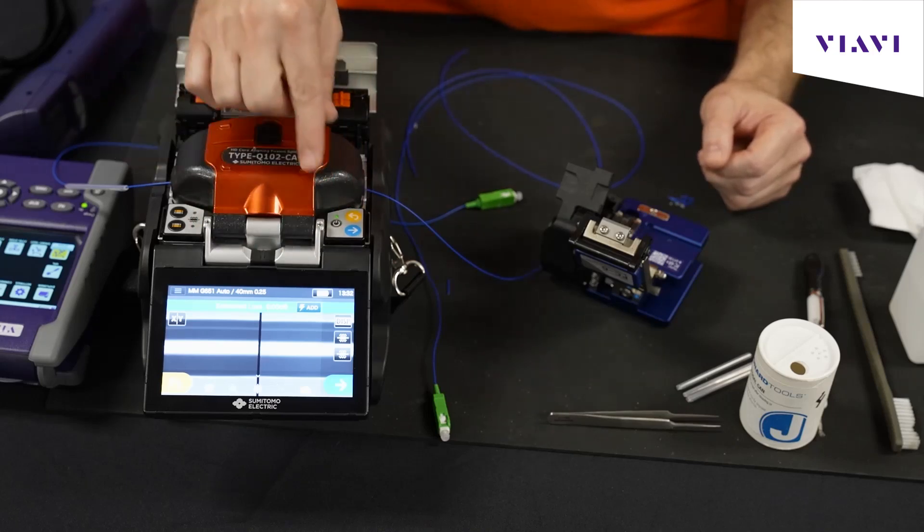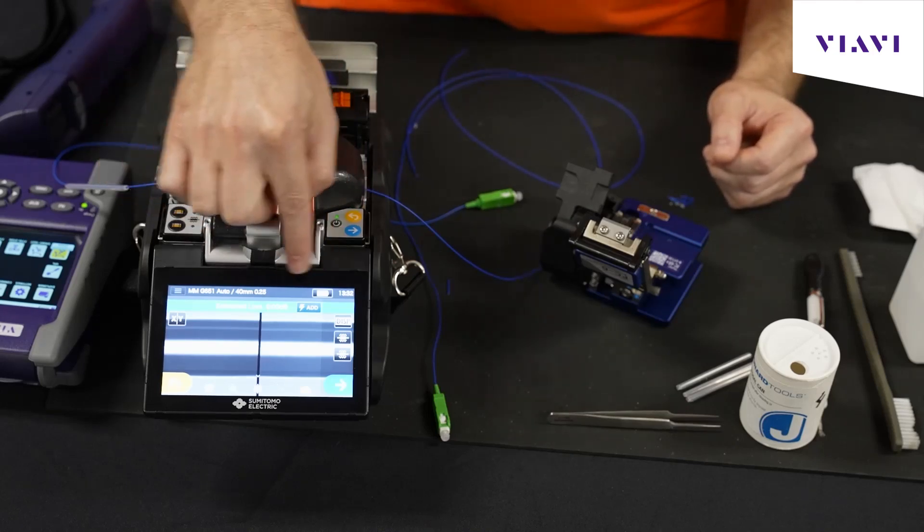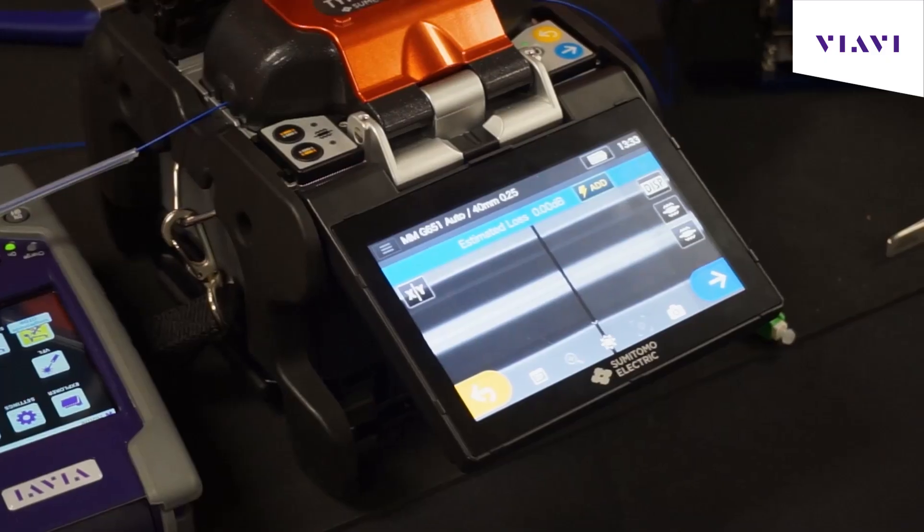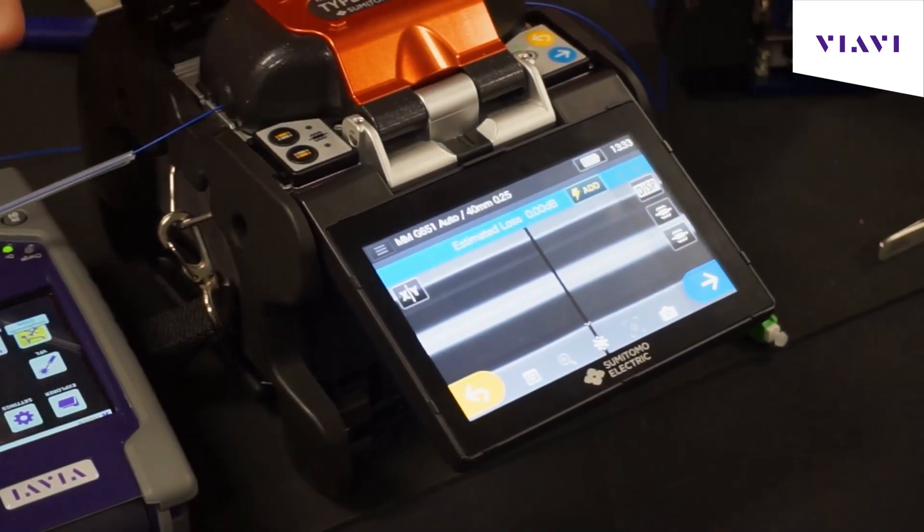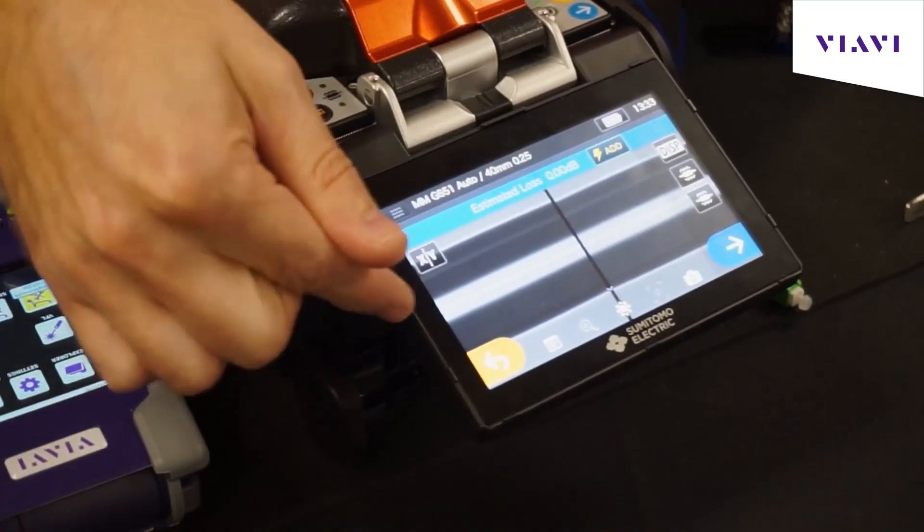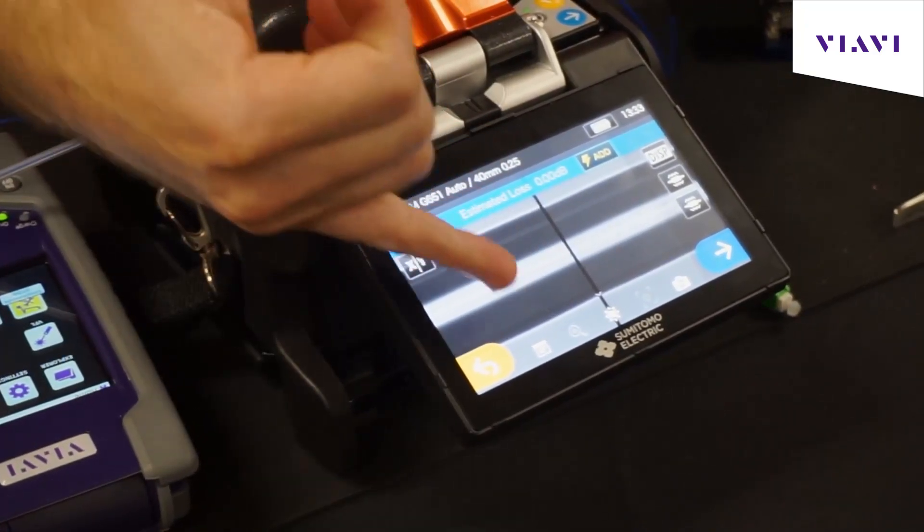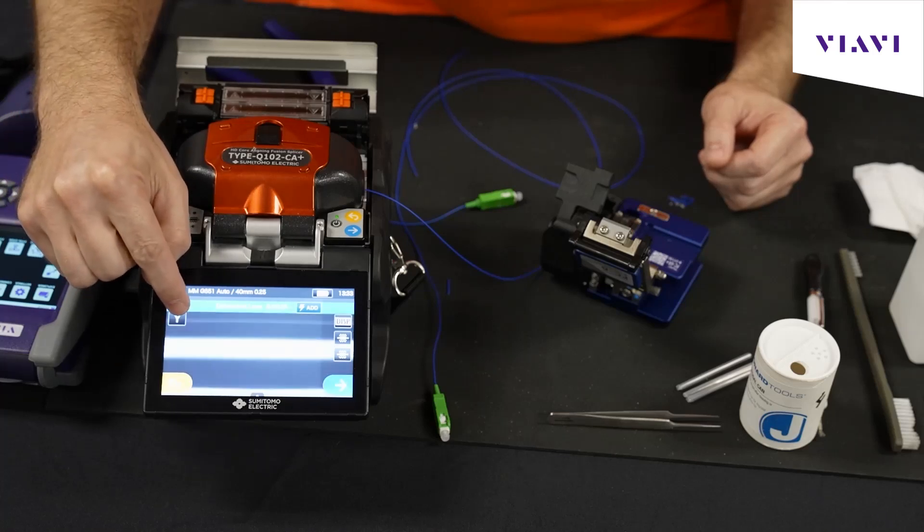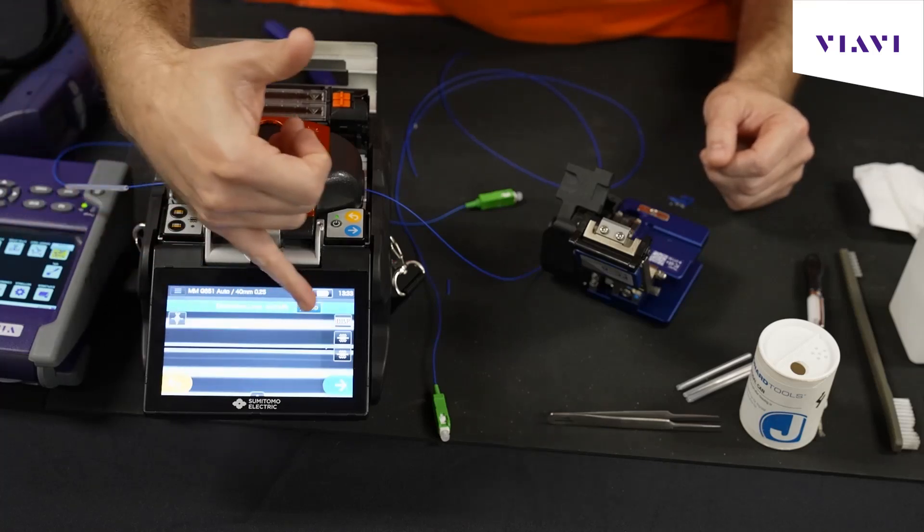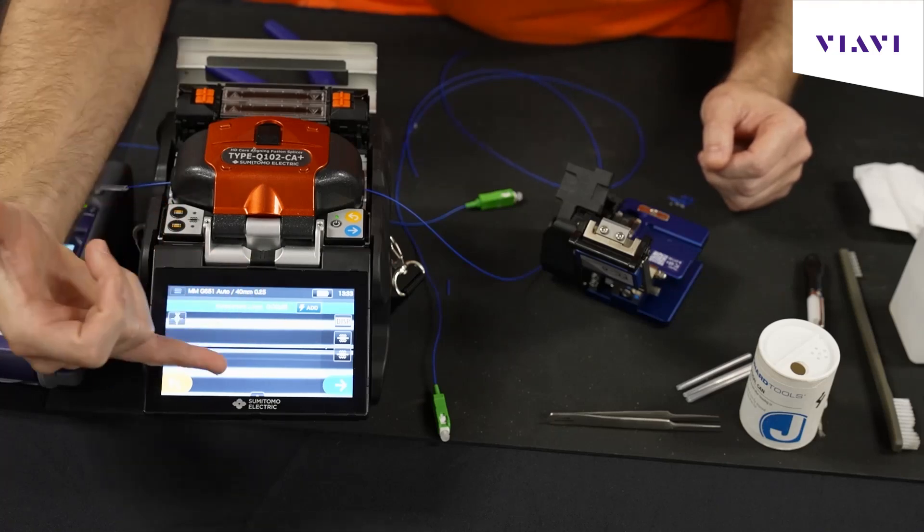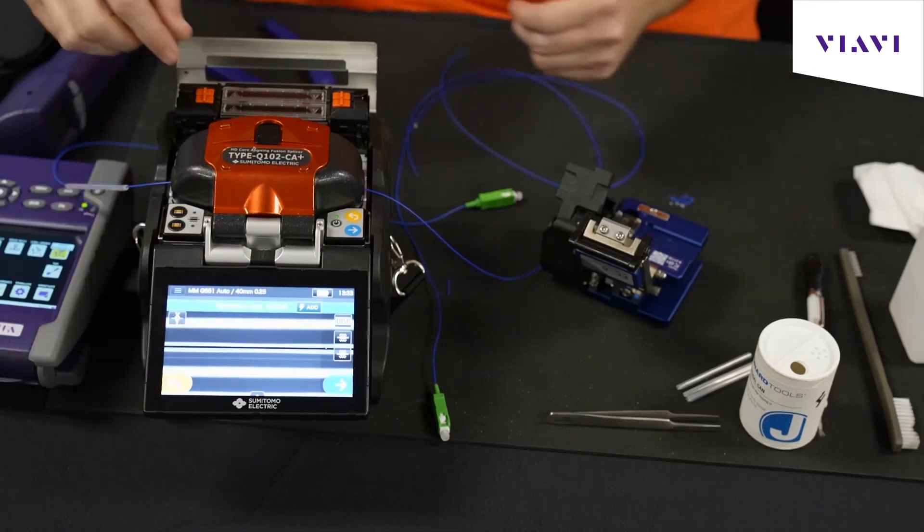Now two things to notice after the splice: I'm looking for estimated loss, which you can see is zero zero. Now that's saying perfect, but I guarantee we're still going to get some loss, which the Viavi test equipment will tell us later. I'm also doing a visual inspection of the splice itself. The splice happened right here in the middle on both windows. I can change this view to look more directly. I actually prefer this top and bottom view. I don't see any defects on the line. Even though it says everything was good to go, we want to do a visual inspection.